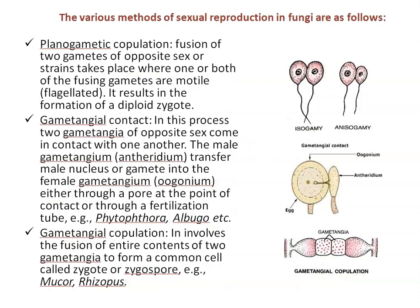Now, different methods of sexual reproduction in fungi. First, planogametic copulation: here, fusion of two gametes of opposite sex or strains takes place. When both gametes are similar, this is called isogamy. When dissimilar, this type of fusion is called anisogamy. It results in the formation of a diploid zygote.